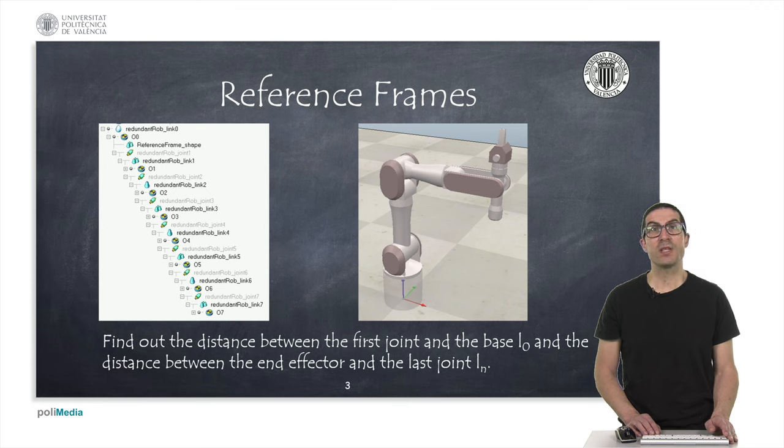We must find out the height of the first joint, that is, the z coordinate with respect to the frame O0. We also need to find out the separation distance of the tip of the end effector with respect to the position of the last joint, that's the distance along the z axis of the last joint.